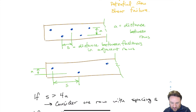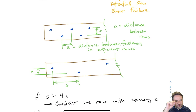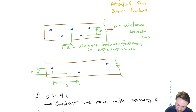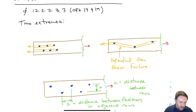So depending on the staggered geometry, I need to decide: do I consider this one row or two rows? And what is my in-row spacing — the spacing between bolts in a single row? The load direction should be specified when discussing rows.